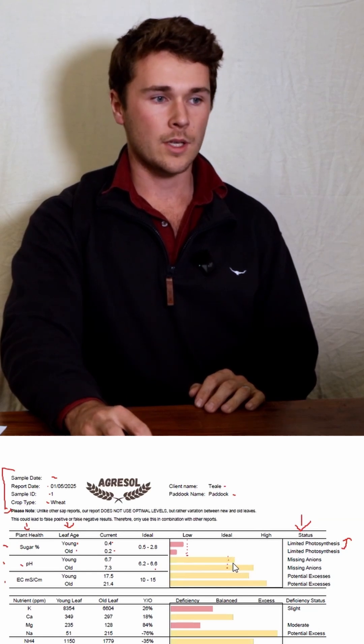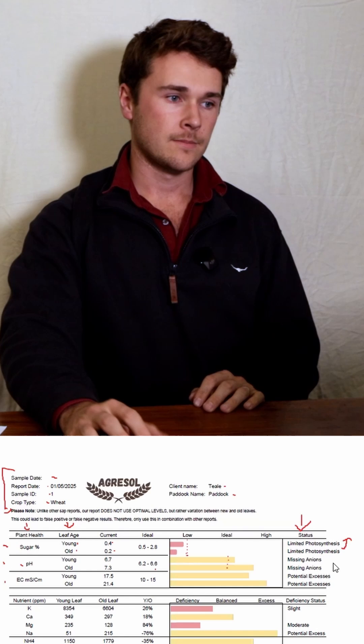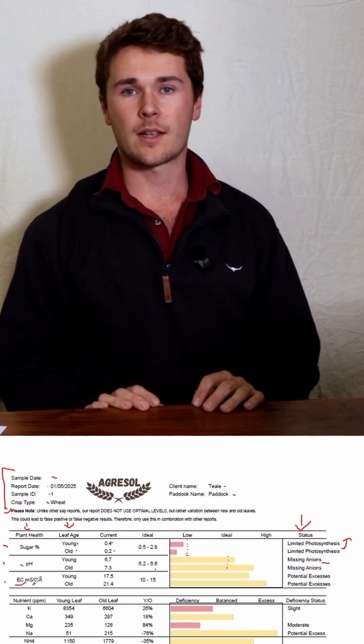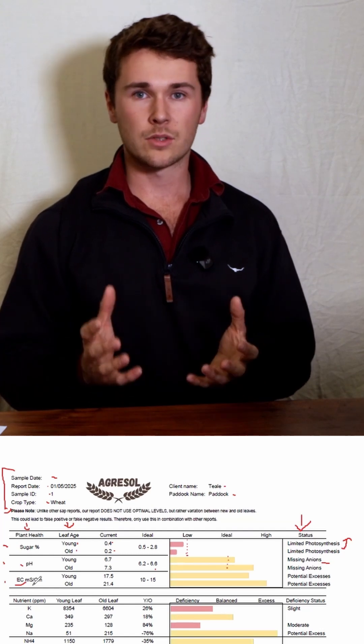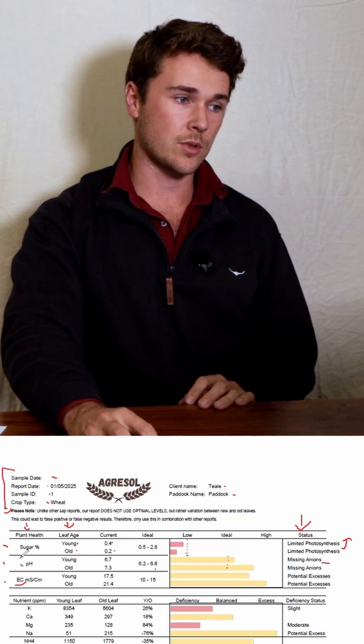Finally, our electrical conductivity. This is the amount of dissolved minerals or ions in our plant sap. This is also a really good indicator of whether we have potential excesses when it's a high number, or whether the plant's not taking up enough nutrients.